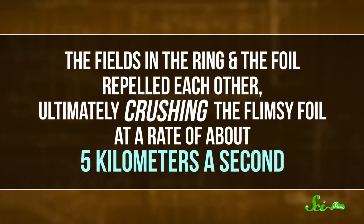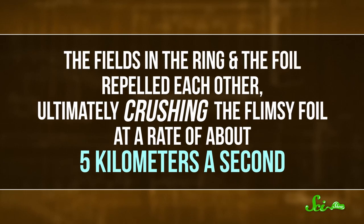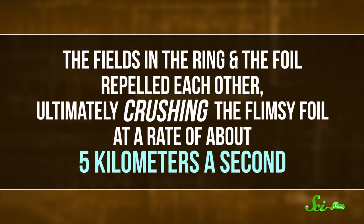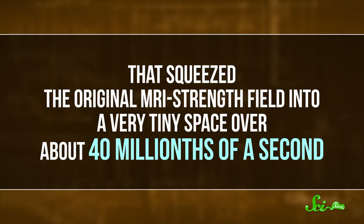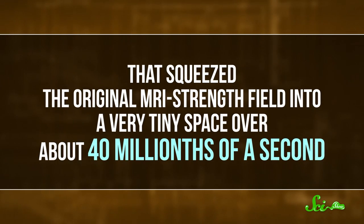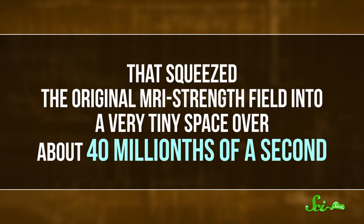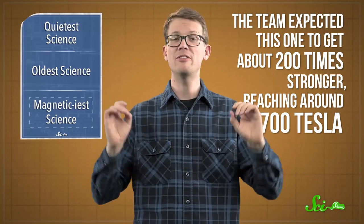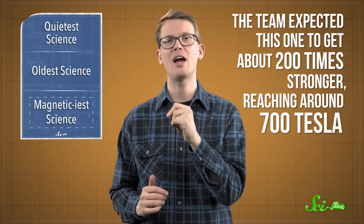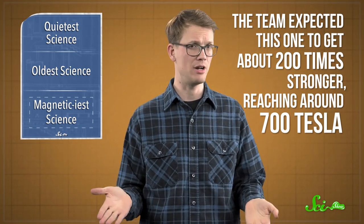The fields in the ring and the foil repelled each other, ultimately crushing the flimsy foil at a rate of about five kilometers a second. That squeezed the original MRI strength field into a very tiny space, over about forty millionths of a second. And when magnetic fields get squeezed, they get stronger. The team expected this one to get around two hundred times stronger, reaching around seven hundred Tesla.